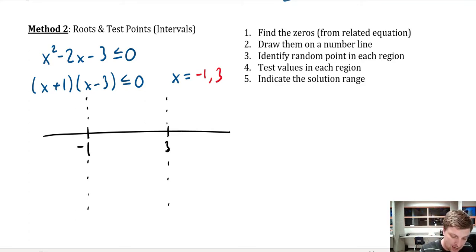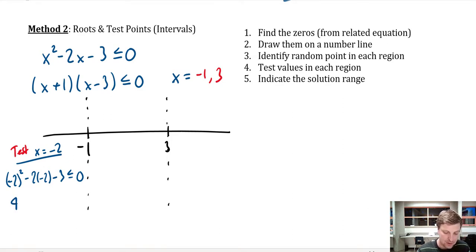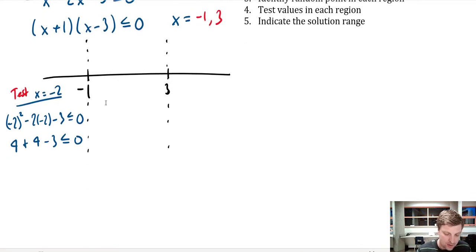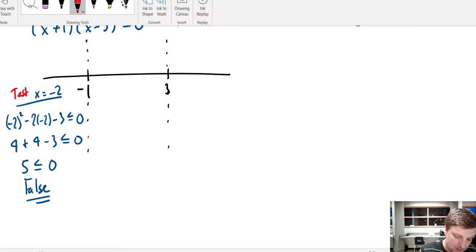Let's test x equals negative 2 in the left region. Substituting gives: negative 2 squared minus 2 times negative 2 minus 3 less than or equal to 0, which is 4 plus 4 minus 3, giving 5 is less than or equal to 0. That is false, so everything to the left of negative 1 is not part of the solution set.